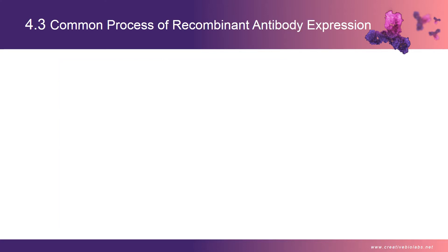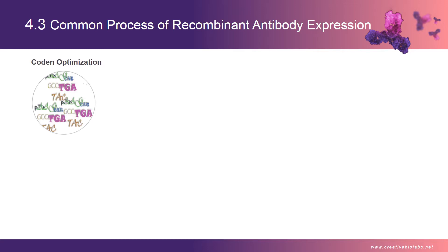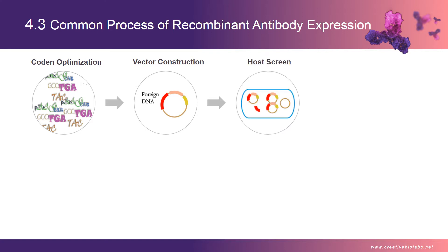In the common process of recombinant antibody expression, it can be summarized into 7 key steps. Step 1: optimize the codon based on antibody sequence and vector sequence. Step 2: construct the target sequence or foreign sequence into the selected vector.